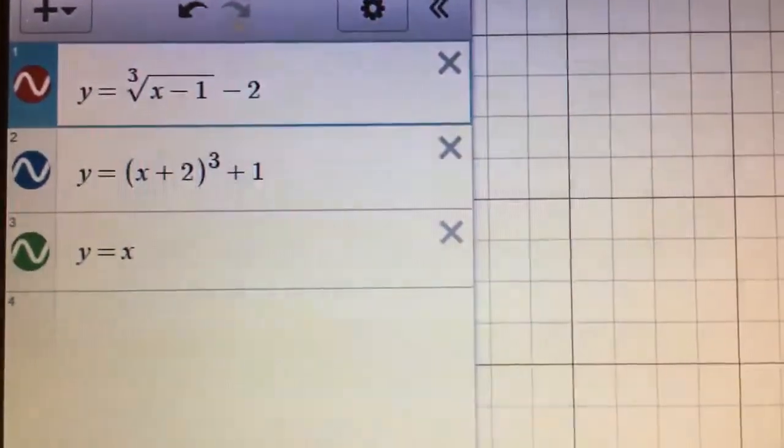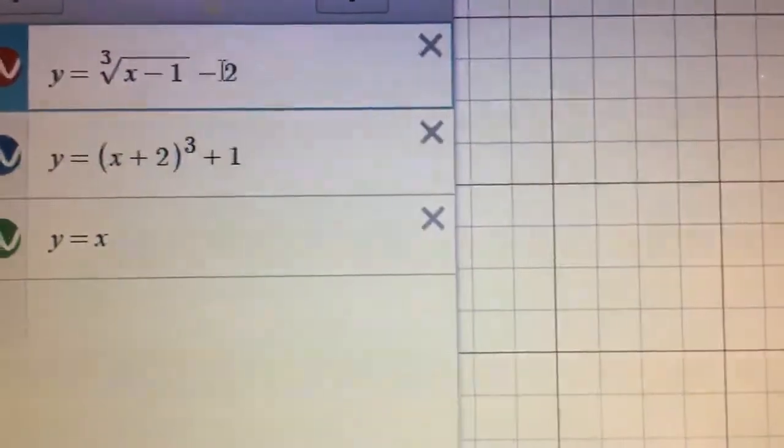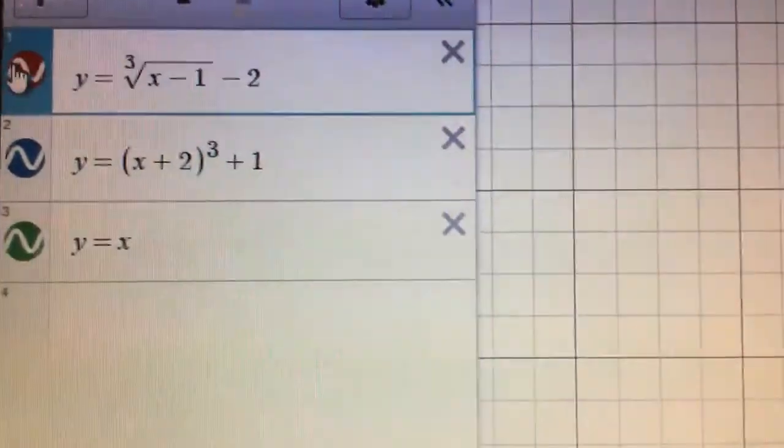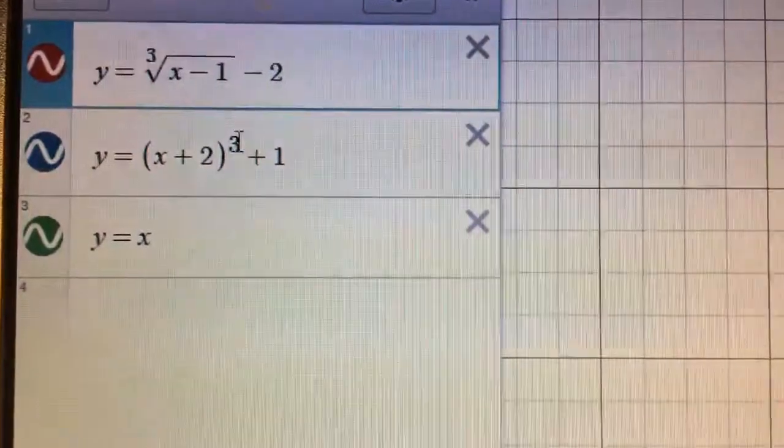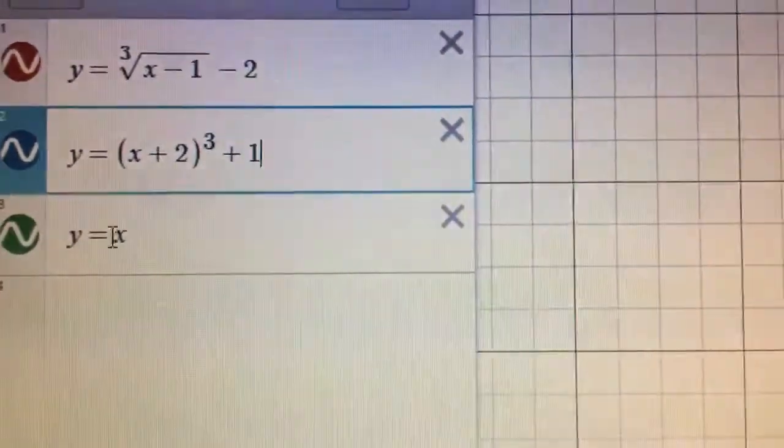We can also look at this graphically. Take a look. Here we have our cube root function. That's our original function in red. We have the inverse of that, which is a cubic polynomial. You can tell by the cube here in blue.